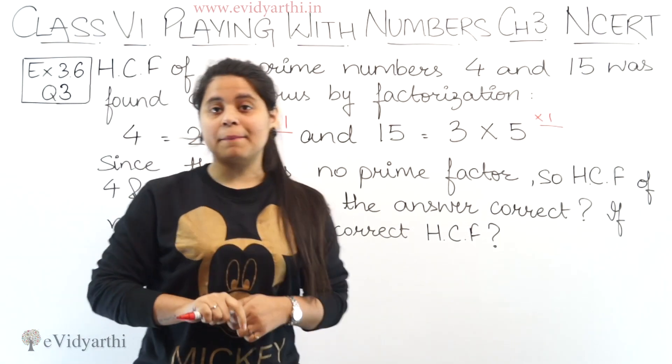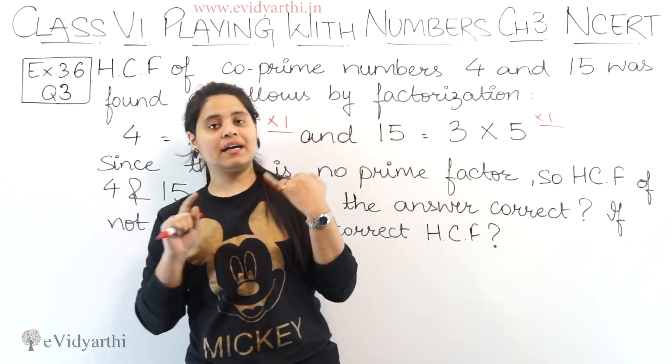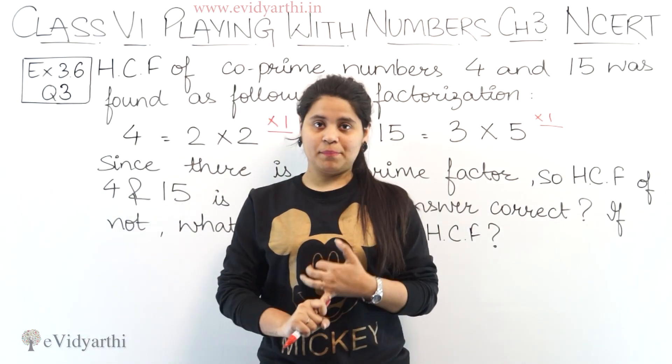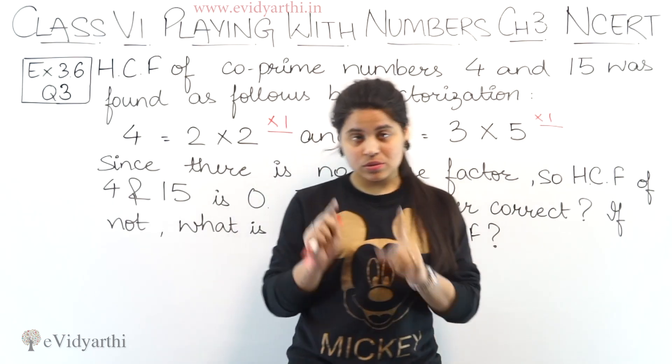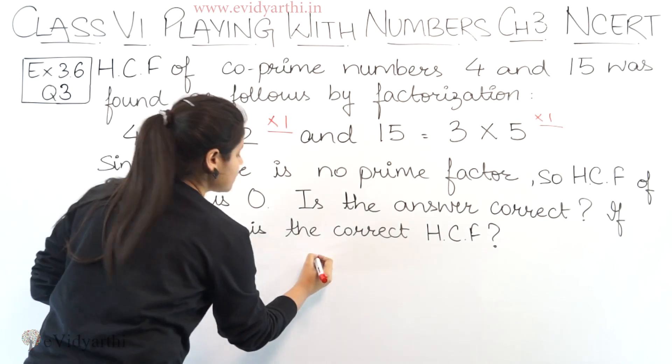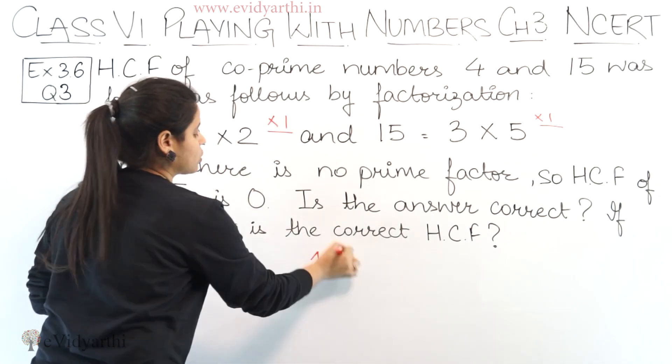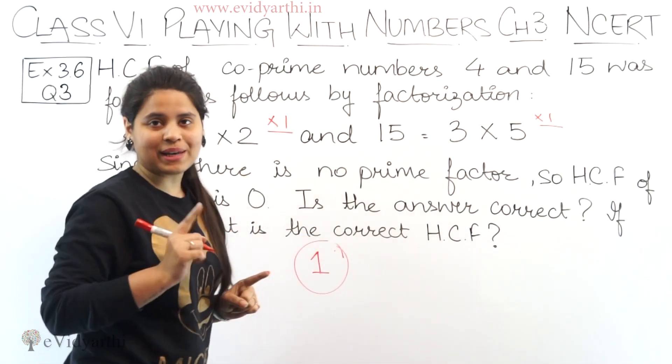So this means if any two numbers, as we saw in the last question, if consecutive numbers exist then their HCF is one, not zero. So this means if two numbers have no common factor then their HCF is one.